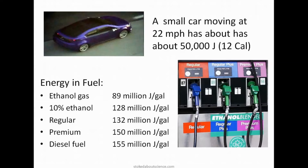A small car moving at neighborhood speeds has about 50,000 joules. It's interesting to look at the energy in a gallon of different fuels. Ethanol does not have as much energy, so a gallon of ethanol won't take your car as many miles. Regular gas also has less energy than premium, so you can figure out whether the extra cost of premium is worth the extra miles — a cost-benefit analysis. Diesel actually has the most energy per gallon.